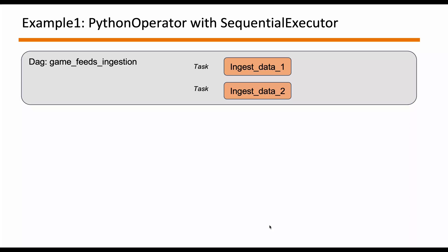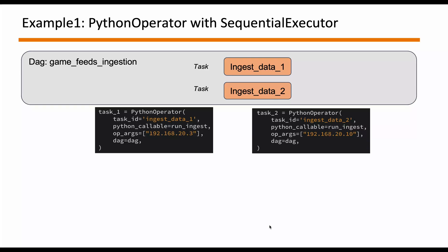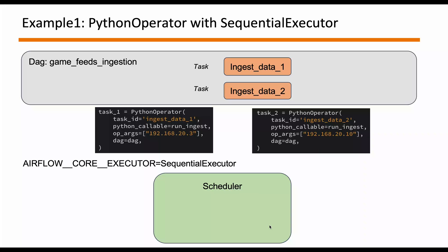Suppose you have a DAG called GameFeeds Ingestion containing two tasks: IngestData1 and IngestData2, with no dependencies — meaning they can run in parallel. Both tasks ingest data from different hosts. Using Python Operator, you initialize an instance giving it the Python function to call with required arguments, like a host IP address. If we configure Airflow to use Sequential Executor, the Scheduler runs each task one by one — IngestData1 is scheduled first, and when it finishes, IngestData2 is scheduled.